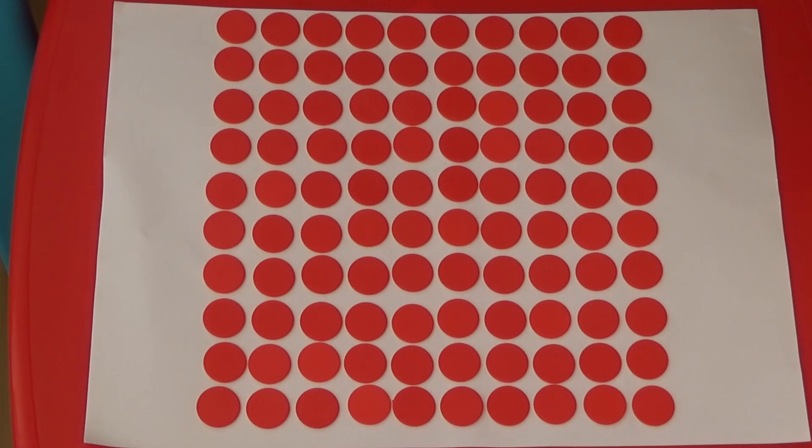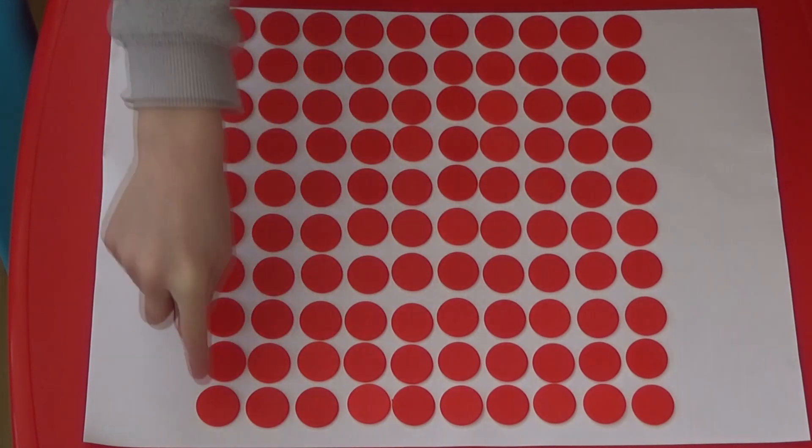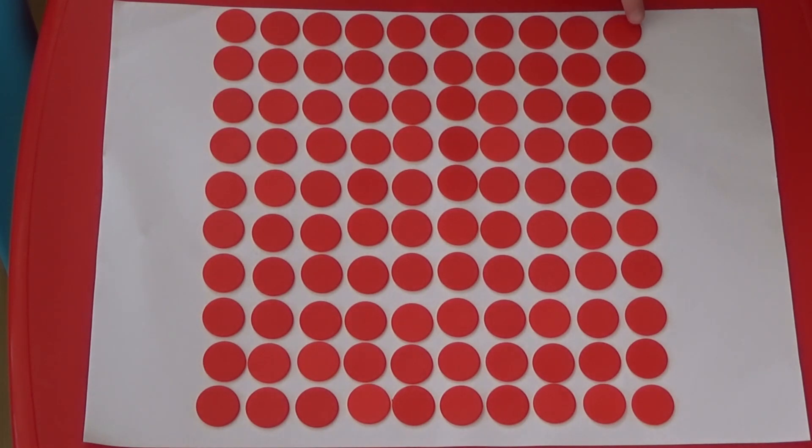In this first activity we're going to estimate a position on a hundred square. Use your counters to make a ten by ten square in one colour. If we imagine our hundred square begins here at one and ends here at one hundred,